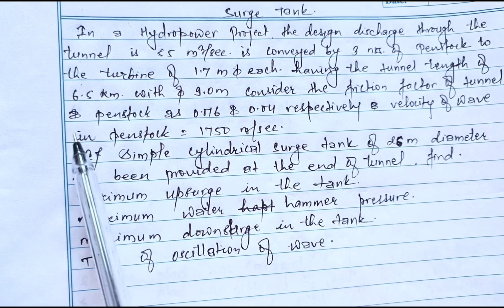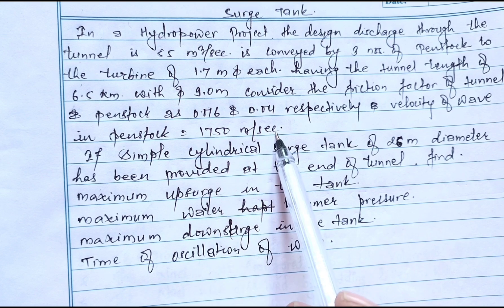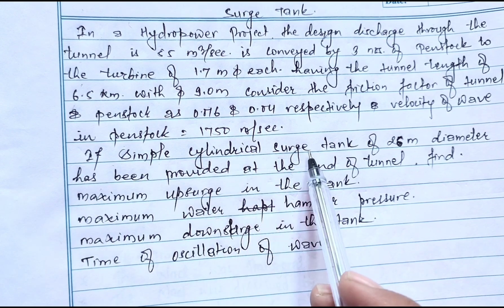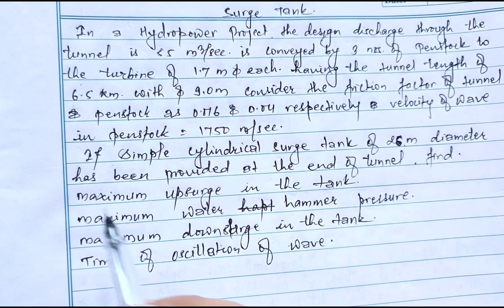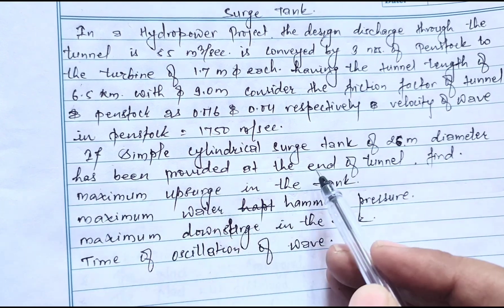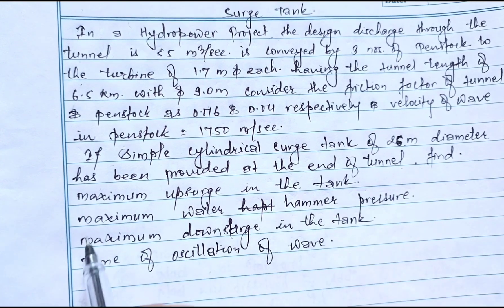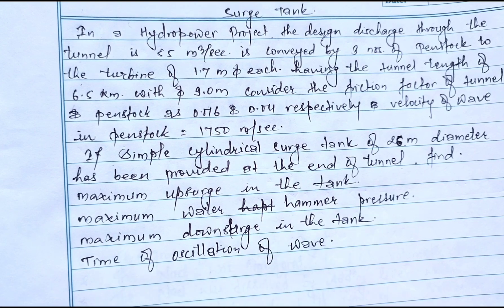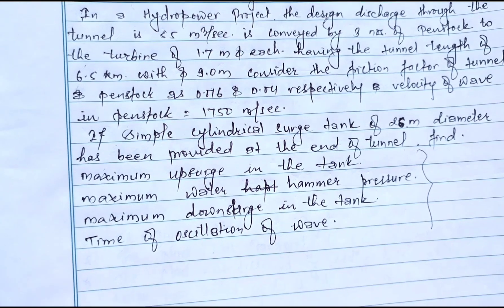The friction factor of the tunnel and penstock are 0.016 and 0.04 respectively. The velocity of the wave in the penstock equals 1750 meters per second. A simple cylindrical surge tank of 26 meter diameter has been provided at the end of the tunnel. We need to find: maximum upsurge in the tank, maximum water hammer pressure, maximum downsurge in the tank, and time of oscillation of the wave.